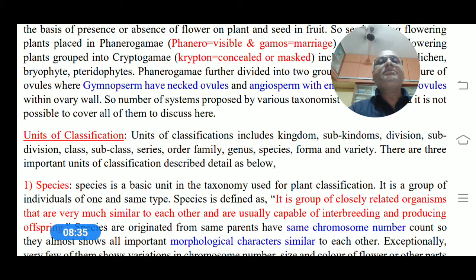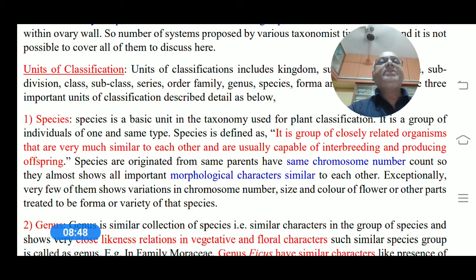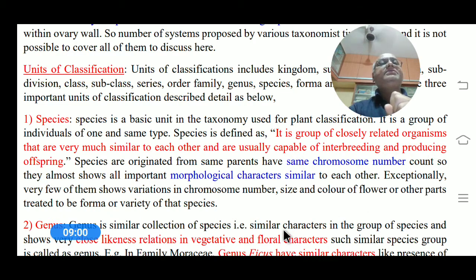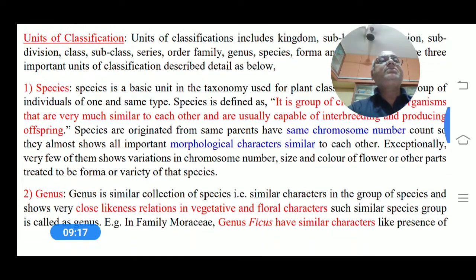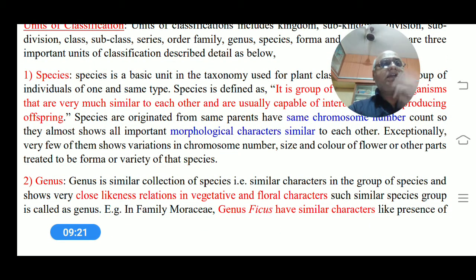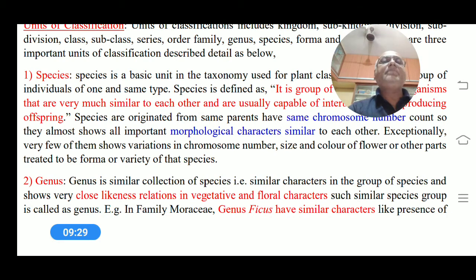The units of classification start from kingdom, sub-kingdom, division, subdivision, down to species, forma, and varieties. Species is the basic unit in taxonomy used for plant classification. It is a group of closely related organisms that are very similar to each other and are usually capable of interbreeding and producing offspring. Morphological characters are similar within a species, but one or two characters may vary — either in chromosome number, size, or color of flowers — making them a variety or form of the species.